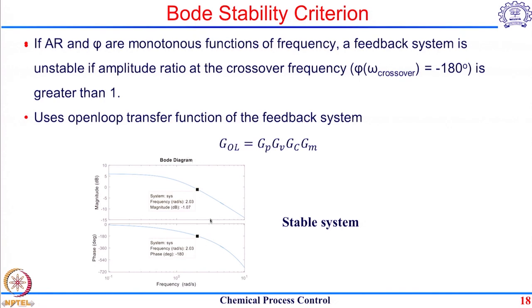Here it is represented as a Bode diagram for a stable system: at the crossover frequency where phase is −π, you move up to the amplitude ratio plot to find the corresponding AR. This is a MATLAB plot where AR is given in decibel units — 20 log(AR). If AR = 1, the decibel value is 0. As long as the decibel value is positive (AR > 1), the system is unstable. Here the decibel value is negative, so the system is stable.